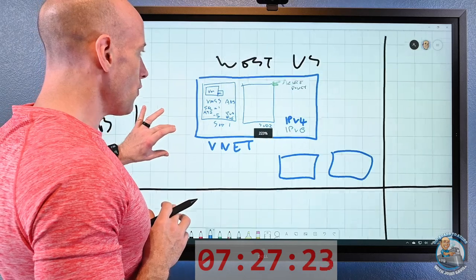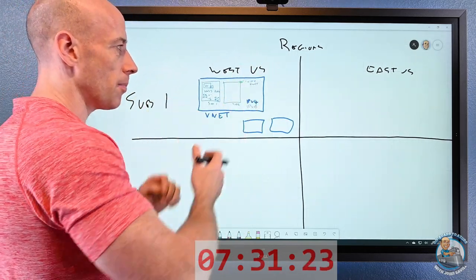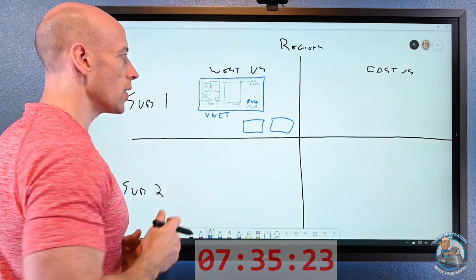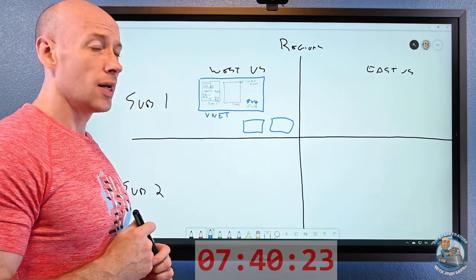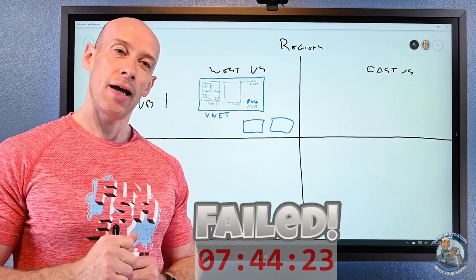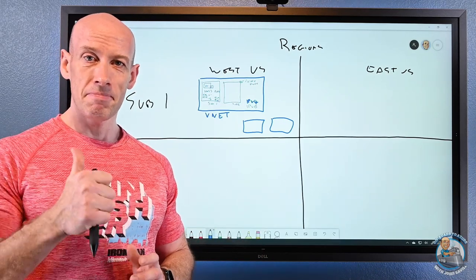So that's really a high-level overview of virtual networks. Again, bound by region, bound by subscription. Break it into subnets. Resources are deployed into that subnet. They all get a private IP from the available scope. I hope that was useful. I hope I was nearly within my six minutes this time. Please like, subscribe, comment, share. Until next time, take care.